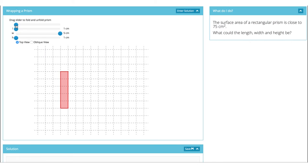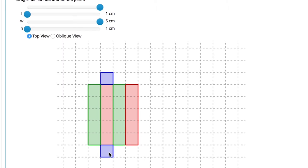They can look at the prism from different perspectives and they can flatten it down. They should be noticing that there were two faces that were the same area and another two and another two.